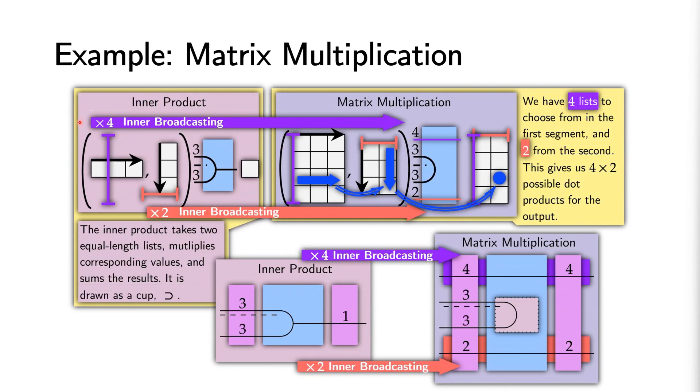Starting with a vector-vector inner product, we derive matrix multiplication as an inner broadcast. Here, we see how an inner product on length 3 vectors offers matrix multiplication between matrices of size 4 by 3 and 3 by 2.